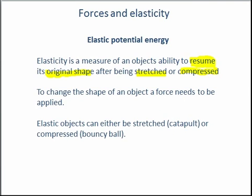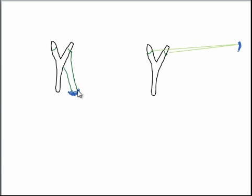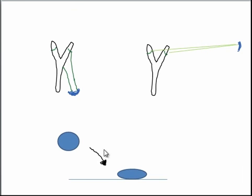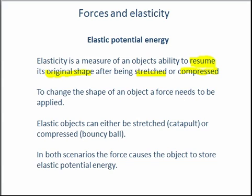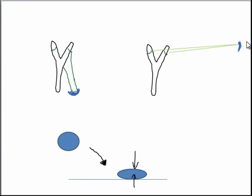An example of an elastic object which is stretched is a catapult — you can see here it's flaccid and loose while it can be stretched. And with a bouncy ball, when it is dropped and lands, it changes shape when it hits the floor because the floor does work on the bouncy ball, as does the weight of the bouncy ball. The force leads to the object storing something known as elastic potential energy, which will eventually be released as an energy transformation. For the catapult and the bouncy ball, this elastic potential energy is transferred into kinetic energy as the bouncy ball resumes its original shape and bounces away, and the catapult resumes its original shape and fires something.